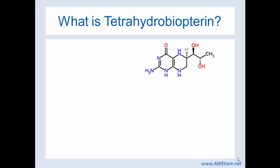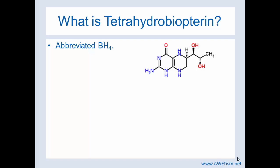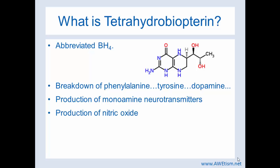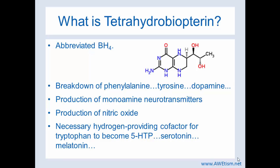Here's what tetrahydrobiopterin looks like, and it is commonly abbreviated BH4, because when you're talking it's a mouthful at times. What does it do? It is involved in the breakdown of phenylalanine, which can then be further involved in tyrosine as well as dopamine, a neurotransmitter. BH4 is also involved in the production of monoamine neurotransmitters, the production of nitric oxide, and it's a necessary hydrogen-providing cofactor for tryptophan to become 5-HTP, which then becomes serotonin.